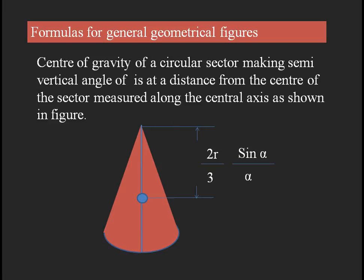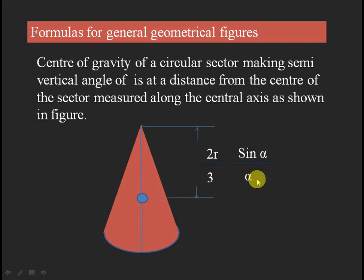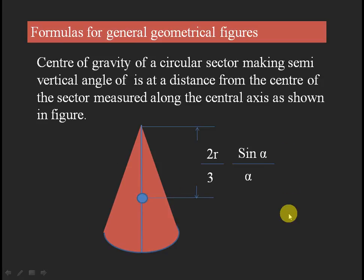For a circular sector with a vertical angle alpha — where the slant surface makes an angle alpha with the vertical line, as shown by the cursor — the center of gravity from the top apex point on the central axis is given as (2r/3) × (sin α / α). Here r is the radius of the slant surface of the sector.